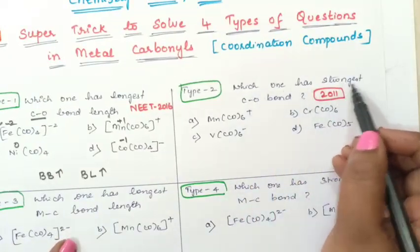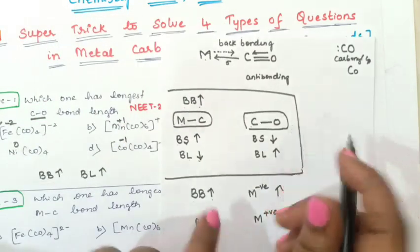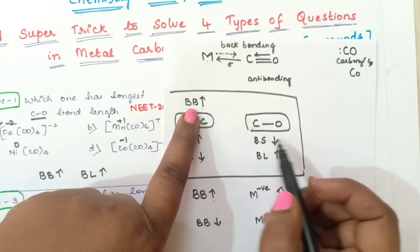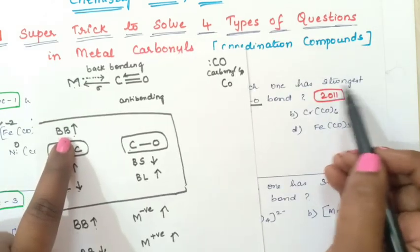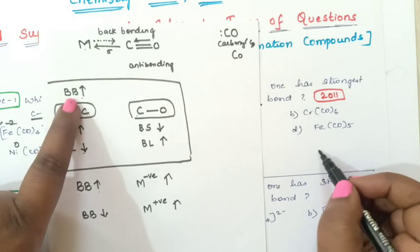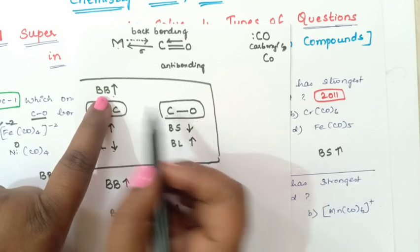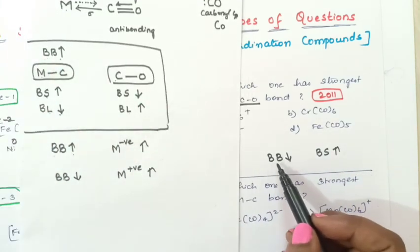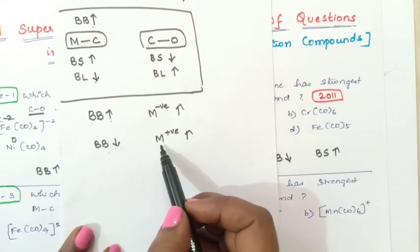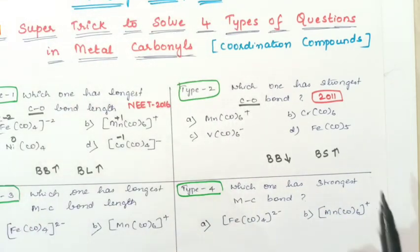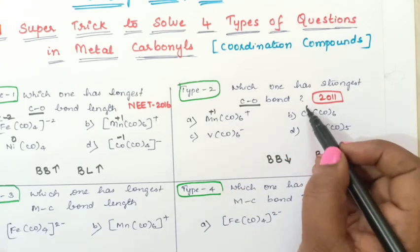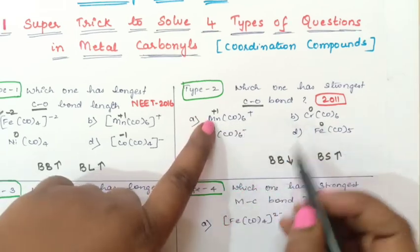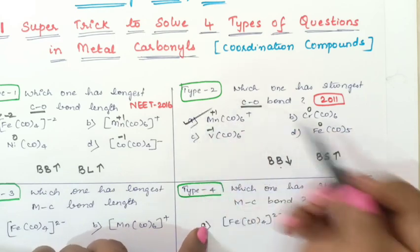Second type of question: which one has the strongest CO bond? When backbonding increases, CO bond strength decreases — both are inversely proportional. So for the strongest CO bond, we need the least backbonding, which occurs when the metal has a positive charge. Mn has plus 1 charge, Chromium has 0 charge, Vanadium has minus 1 charge, Iron has 0 charge. The most positive charge is on Mn, so backbonding will be least there and CO bond strength will be greatest. Option A is the correct answer.